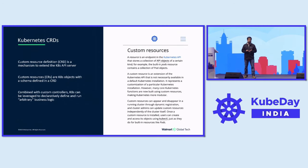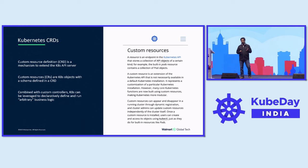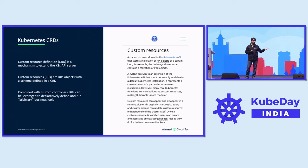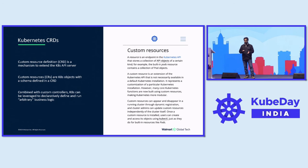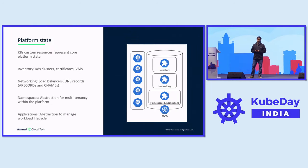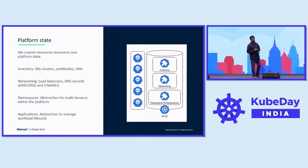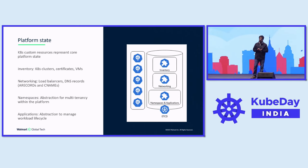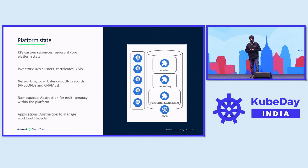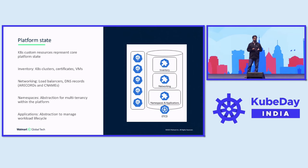When we think of extending Kubernetes, we think of Kubernetes custom resource definitions, which is the approach we have also taken. Combined with our custom controllers, this allows us to implement our entire platform's business logic. The custom resources are used to store the platform state and can be combined into three major categories: inventory, networking, and namespaces and applications. Namespaces provide an abstraction to manage multi-tenancy, and applications provide a mechanism to deploy applications out to multiple clusters.